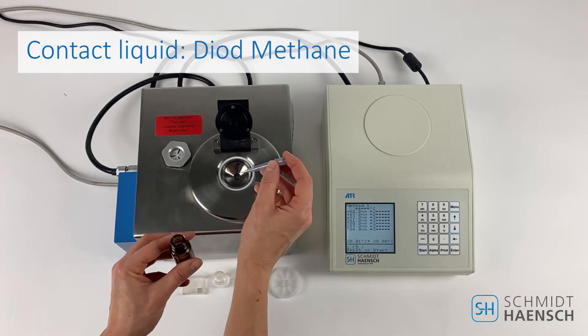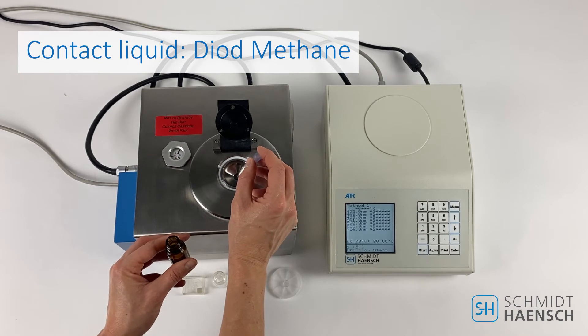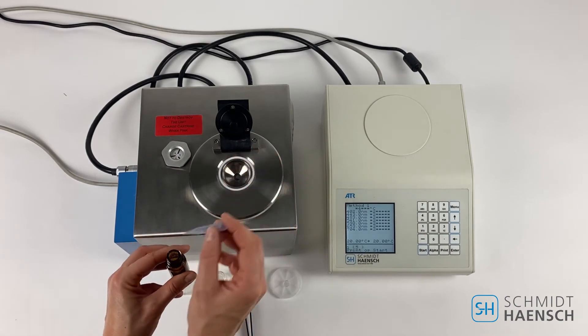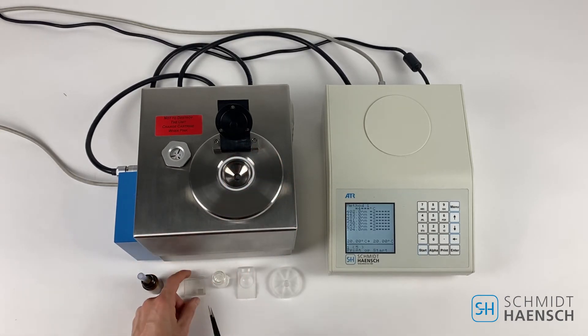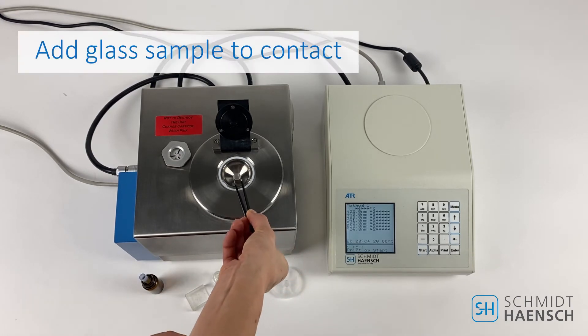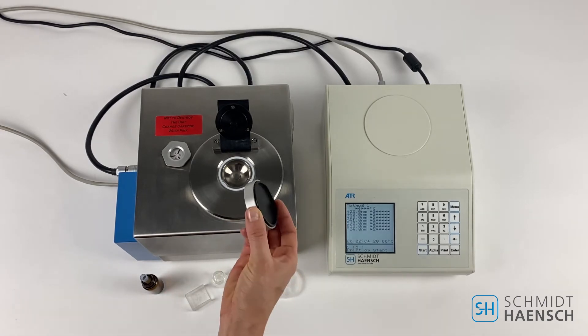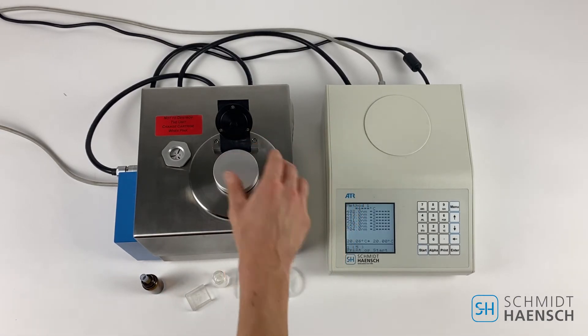In order to get rid of the reflection of the upper surface we will apply another drop of liquid on top of the polymer sample. We will also apply the glass sample to contact the polymer foil. Then again close the lid.